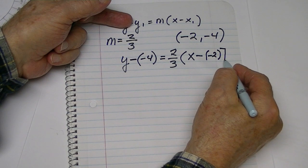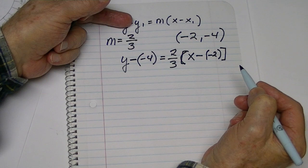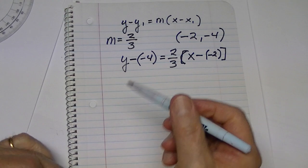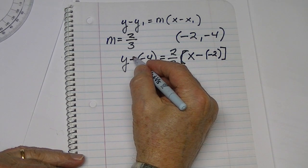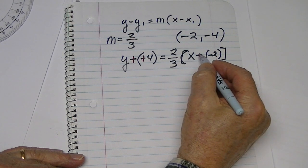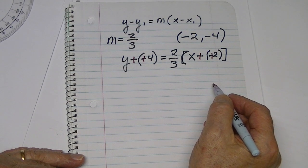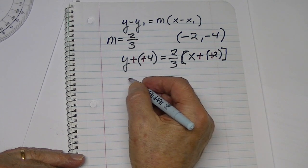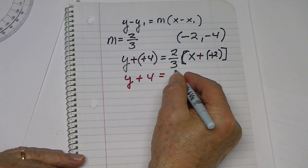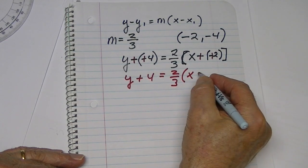Theoretically I should use a bracket there, but that's okay. Now, what's our next step? Those two negatives make a positive, and again these two negatives make a positive. So to clarify, we now have y plus four equals two-thirds x plus two.